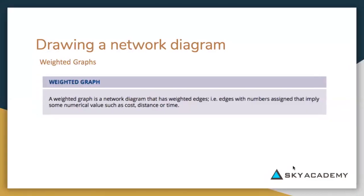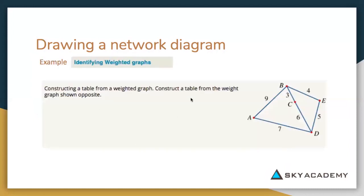Now we are going to draw a network diagram which has weights on them. A weight is just a numerical value. Looking at this diagram, we have a weight from A to B that is nine, and we have been asked to construct a table from the weight graph shown. I'm going to share my whiteboard and draw a table from this graph using the weights provided.